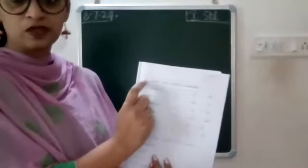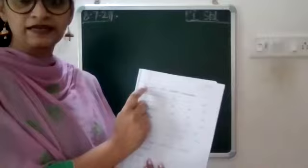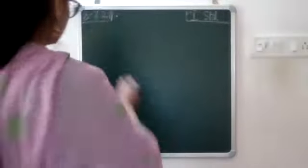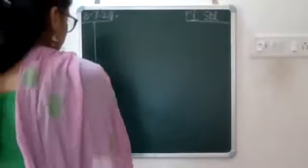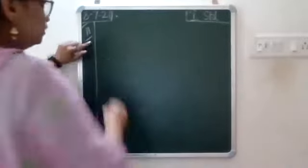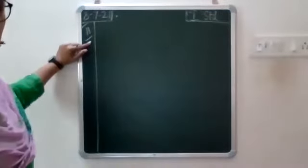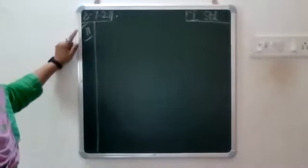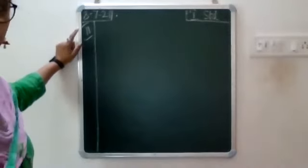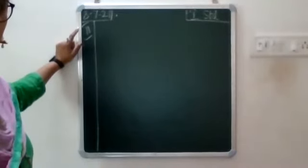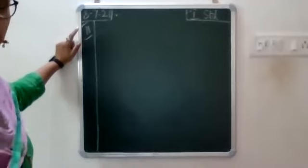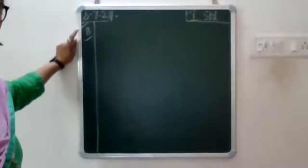Now the first line below the red line — write Roman number two. You will put two lines like this, draw the line up and down. This is called Roman number two.